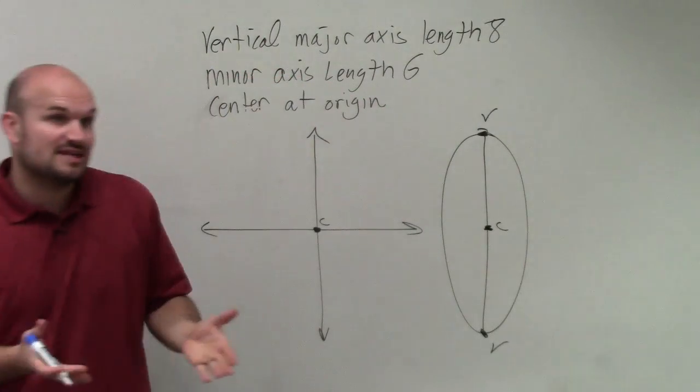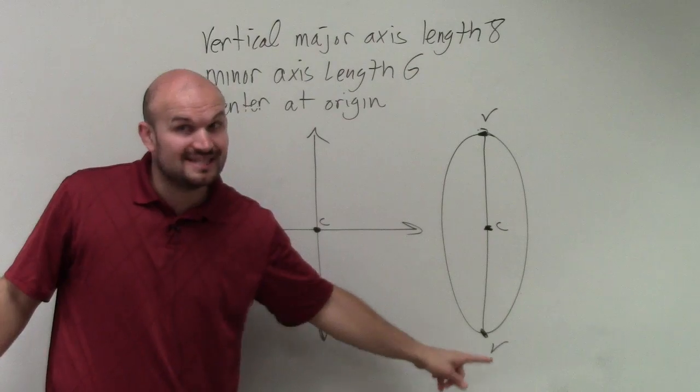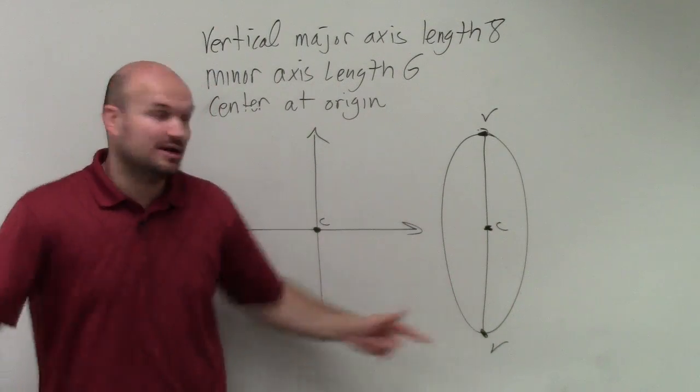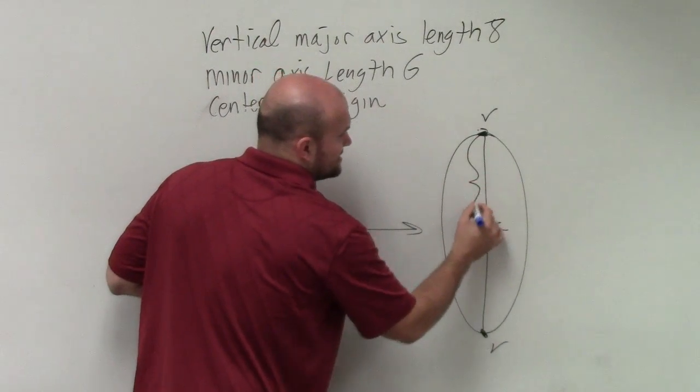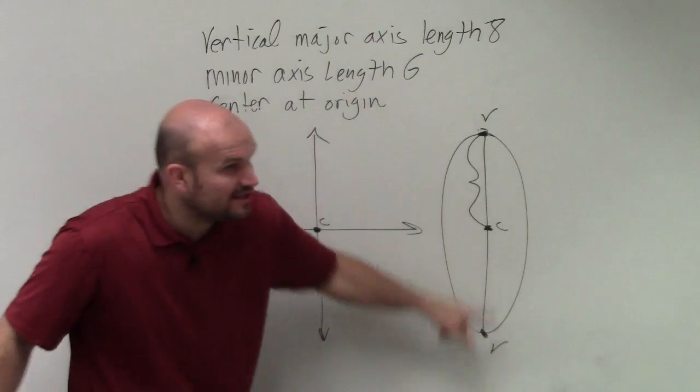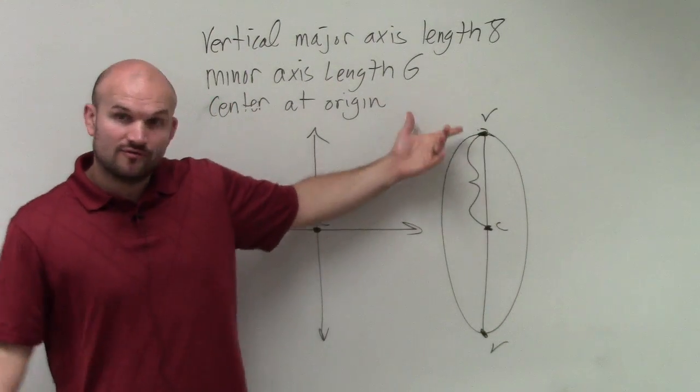So if they're telling me the length from here to here is 8, I just want to know what the length is from here to here. So from here to here is 8. How far is it just from here to here? 4.